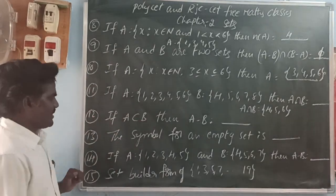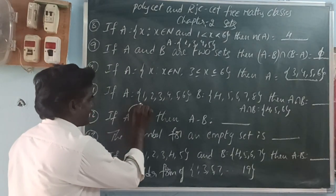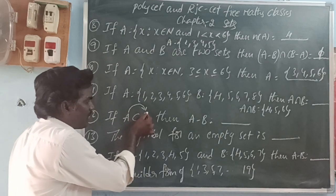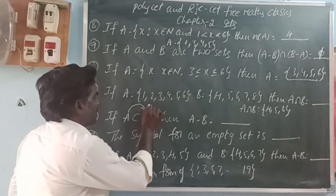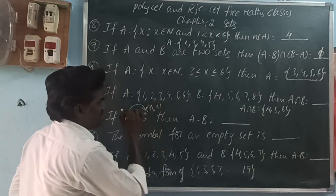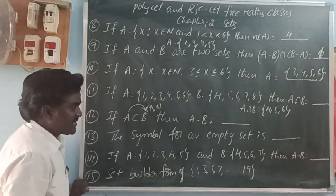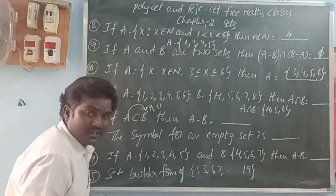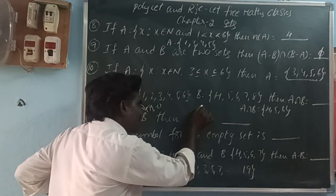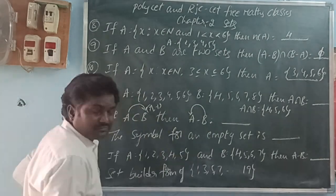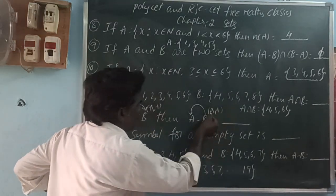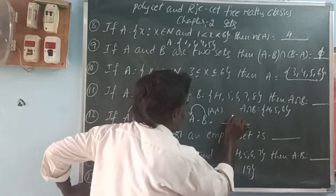Next: A subset B means all the elements of A are in the set of elements of B. So the set B contains A's elements and extra elements. Then A minus B — what is the difference of A minus B? That means which elements of B are in A, those elements we subtract from A. What are the remaining elements? Empty set.